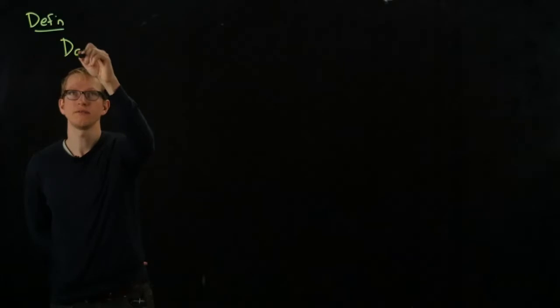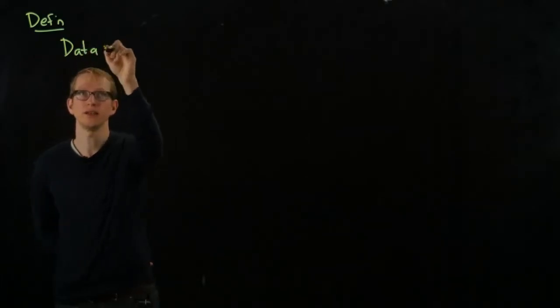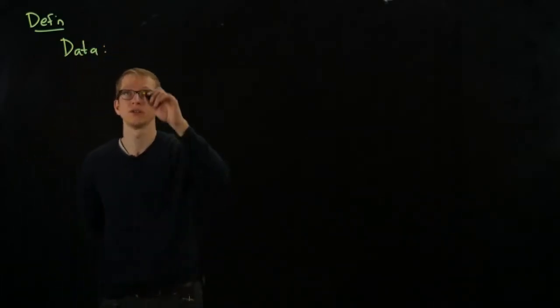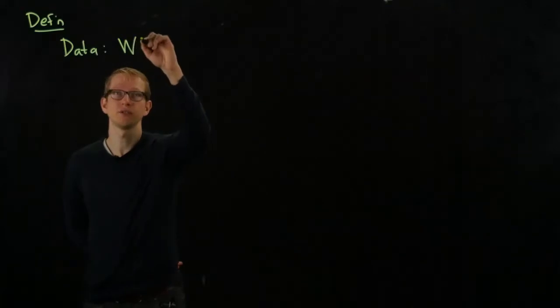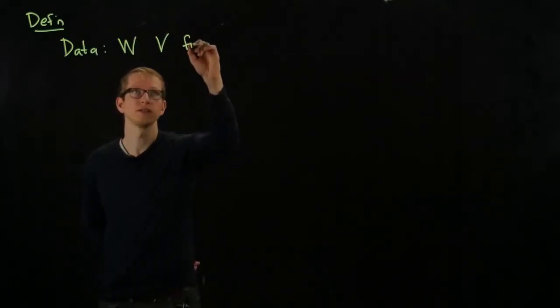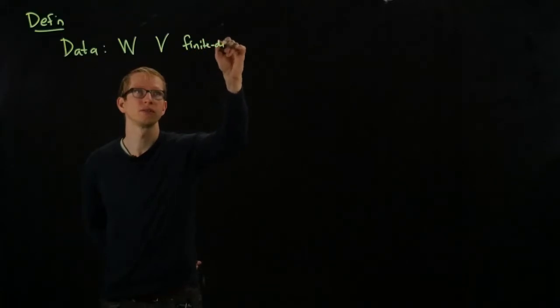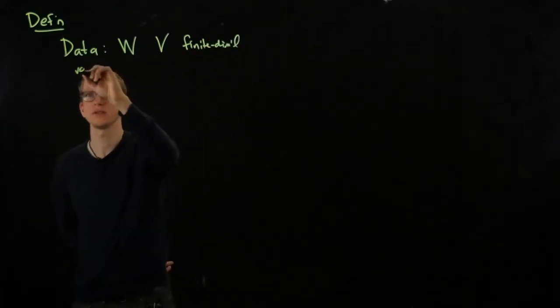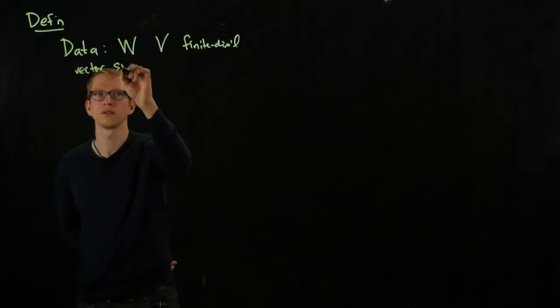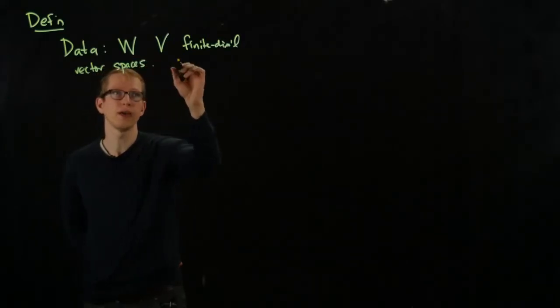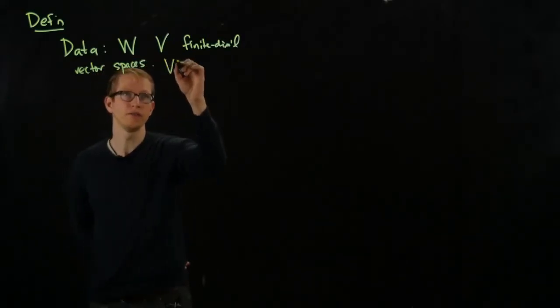So let me write this definition in terms of data and a construction. So suppose that you have two finite dimensional vector spaces W and V, let's say finite dimensional vector spaces, and let V to W,